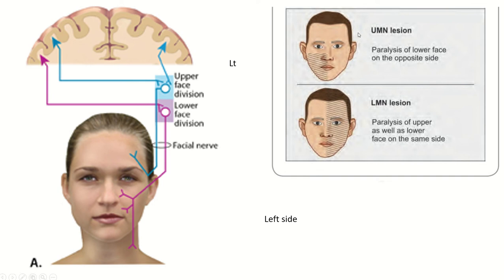So in an upper motor neuron type of lesion, the upper part is never paralyzed because it is supplied by the motor cortex of both sides. But the lower part is supplied by the motor cortex of the opposite side only. So in an upper motor neuron lesion causing facial palsy, the opposite side lower part of the face is paralyzed.